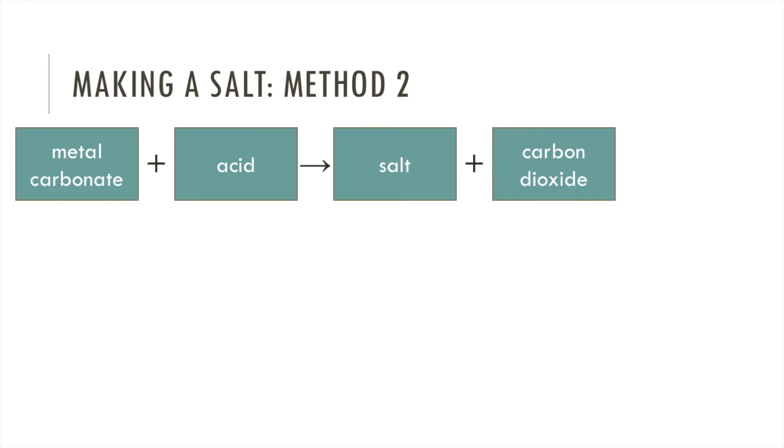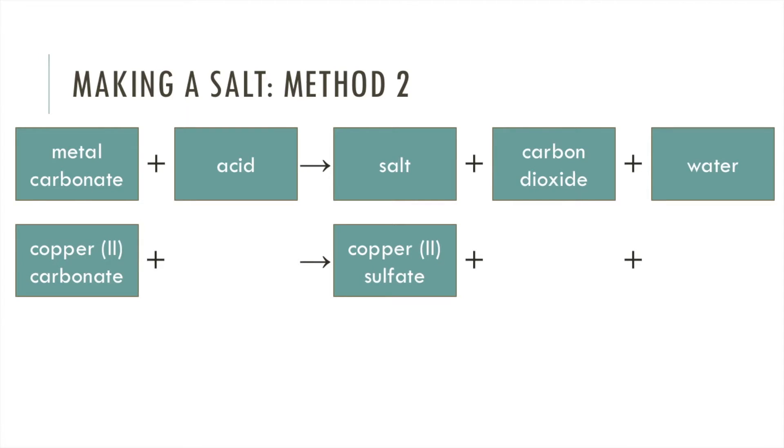The second method to make a salt involves using a metal carbonate. You react this with your acid, getting a salt plus carbon dioxide and water. So again, if we want to make copper sulfate, the metal carbonate used must have been copper carbonate. Then because the salt ends in sulfate, that means the acid used has to be sulfuric acid.